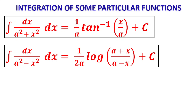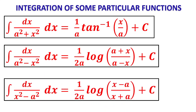For ∫dx/(a² - x²), the result is (1/2a)·log|(a + x)/(a - x)|. How to remember it: a² - x² factorizes as (a + x)(a - x), giving (1/2a)·log|(a + x)/(a - x)|. This can also be derived using partial fractions. Similarly, ∫dx/(x² - a²) = (1/2a)·log|(x - a)/(x + a)|, since x² - a² = (x - a)(x + a).